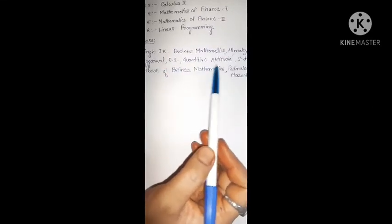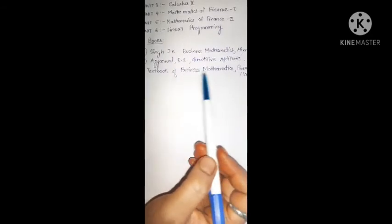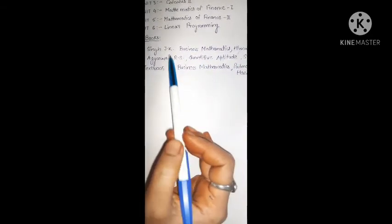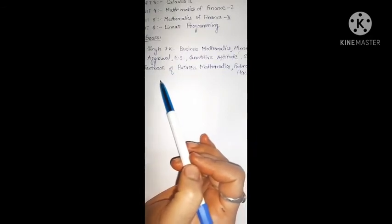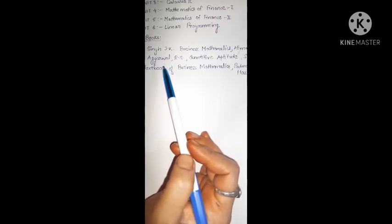Next one is R.S. Agarwal, that is Quantitative Aptitude, and the publisher is S. Chand. And the last one is the Textbook of Business Mathematics. So along with these books, you have to follow the previous question papers. If you follow the question papers, most of the questions are repeated.